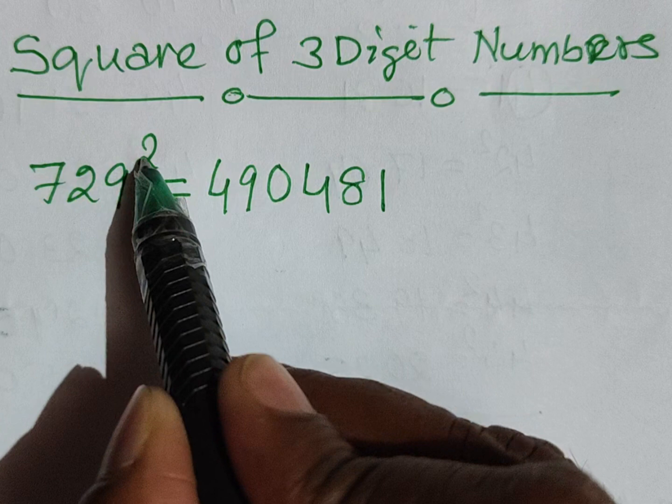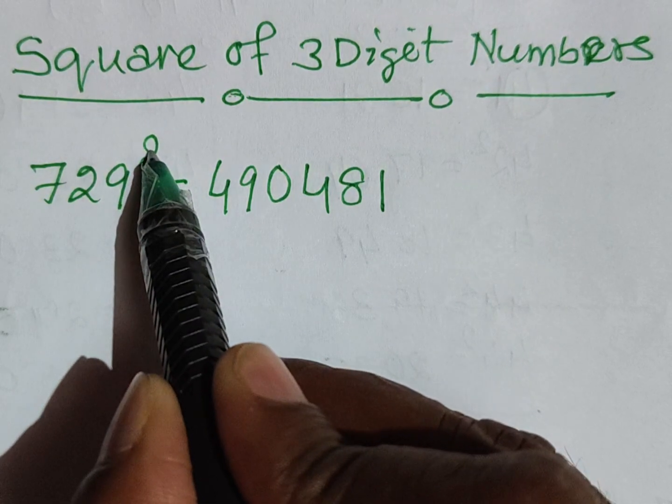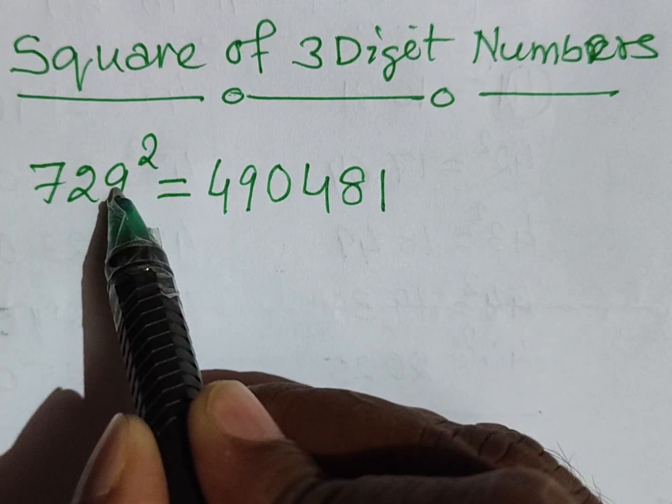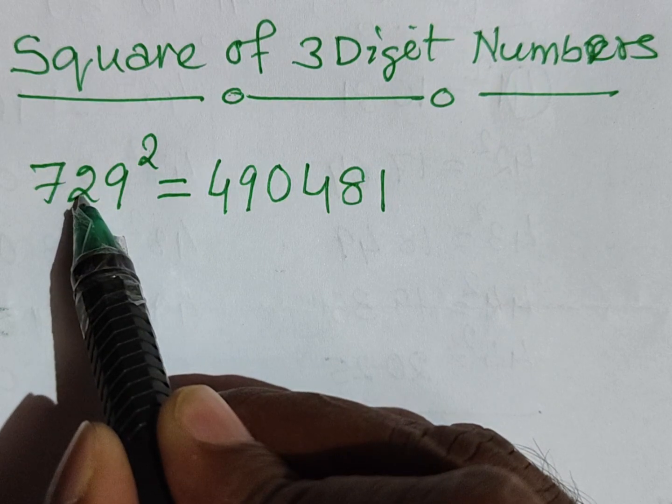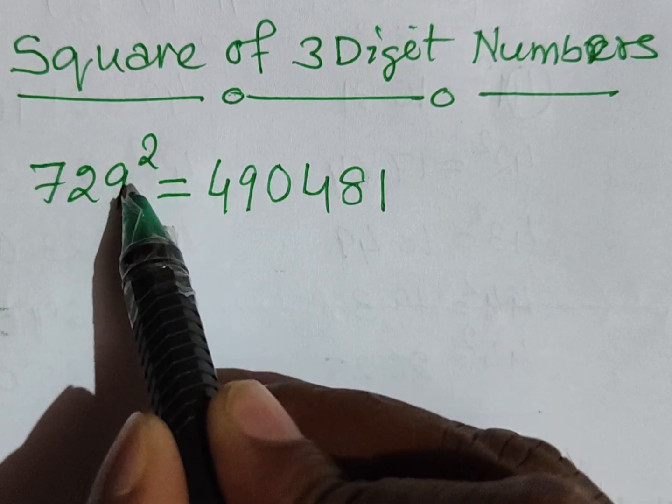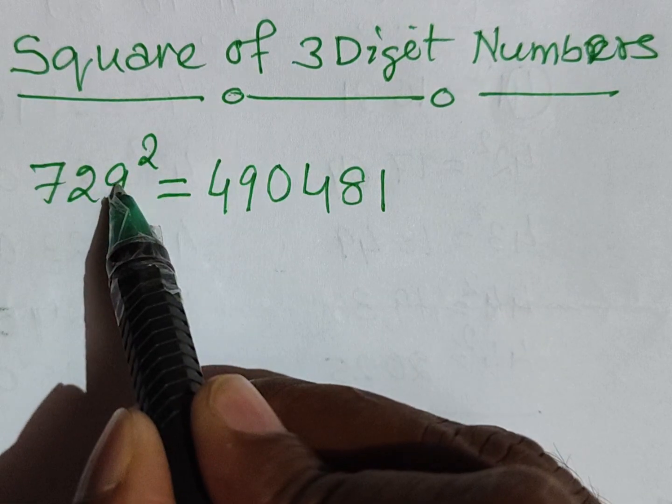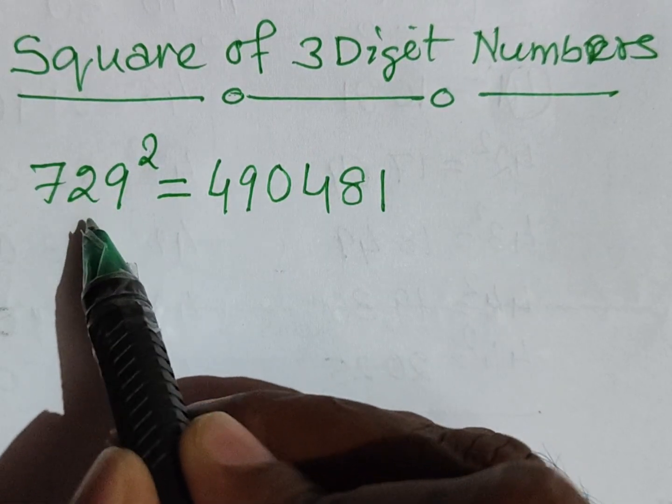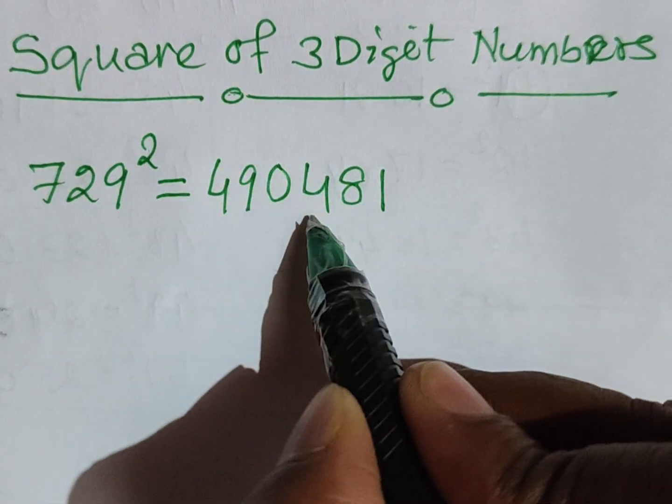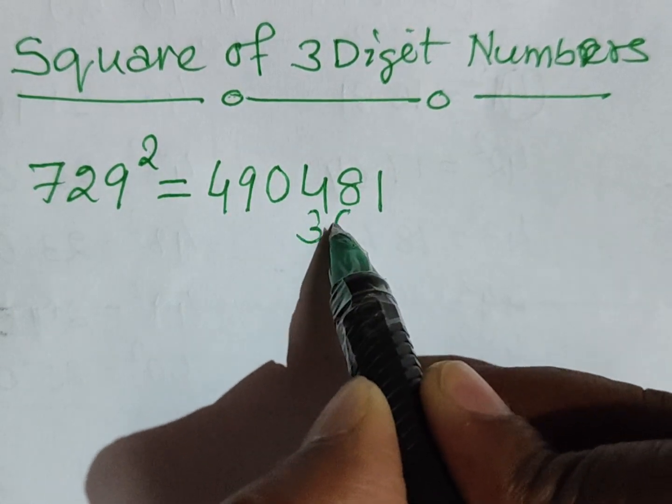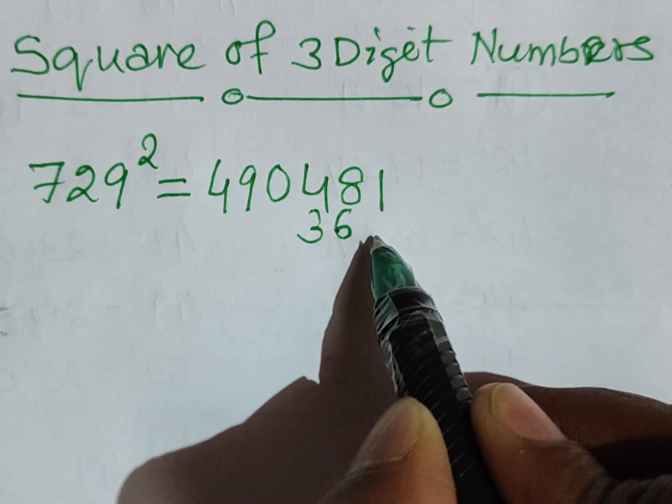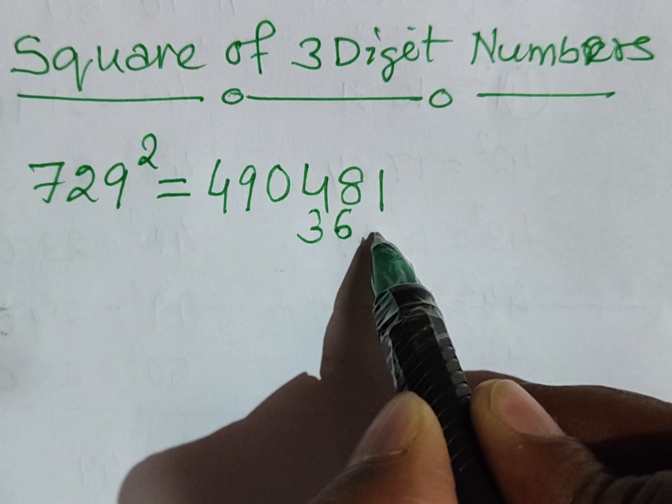Then next step: we multiply by 2 the units digit 9 and tens digit 2. So their product is 2×9 is 18, 18×2 is 36. We write this in the hundreds and tens place. We leave blank the units place.